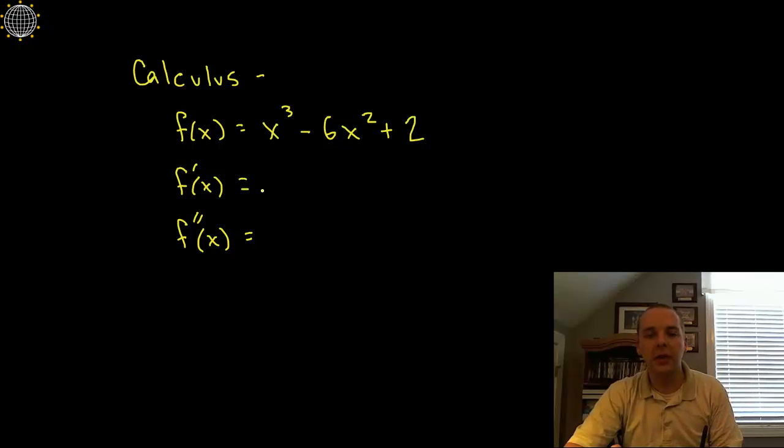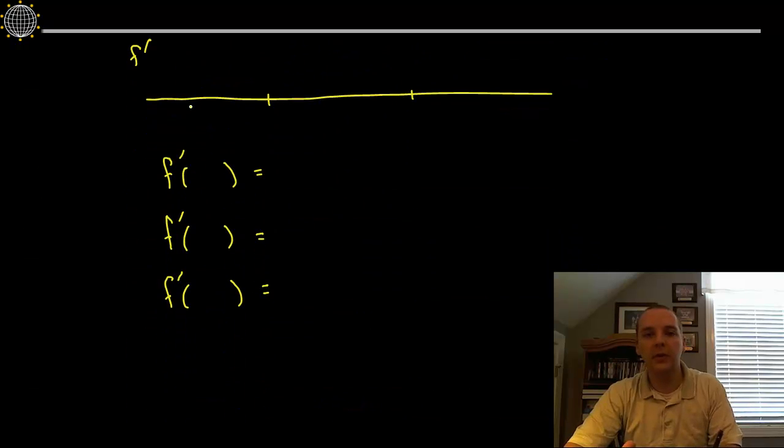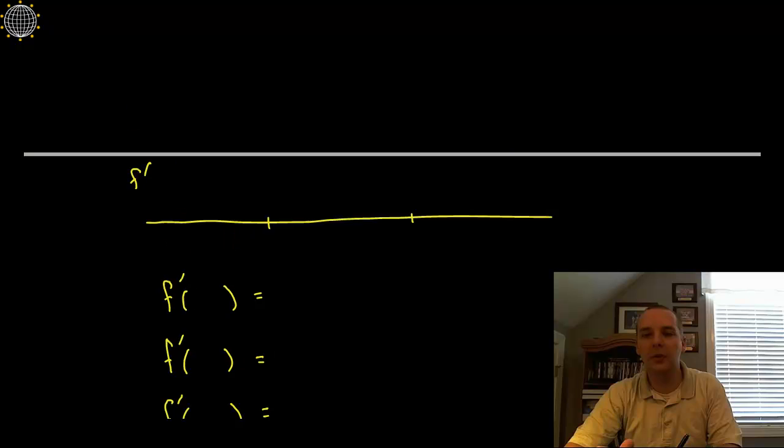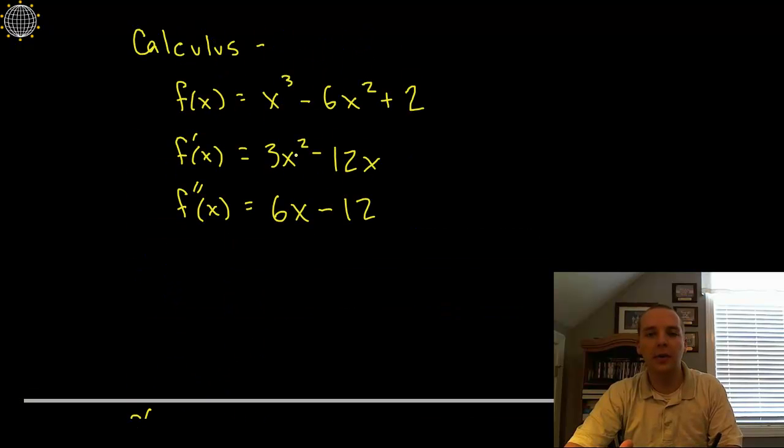Here's the original function, let's start by finding the first and second derivatives because they can tell me things like points of inflection or critical values. So the derivative would be 3x squared minus 12x and the second derivative would be 6x minus 12 and these two guys are going to help me immensely as far as finding out information about the function.